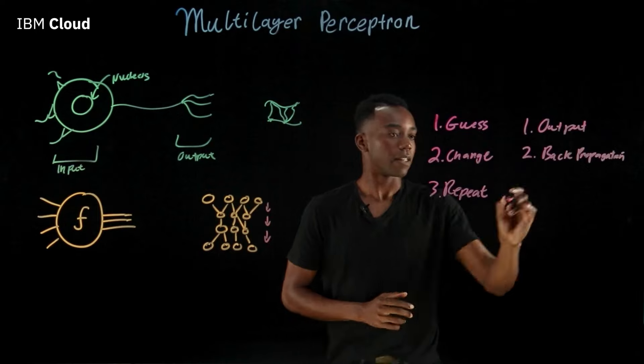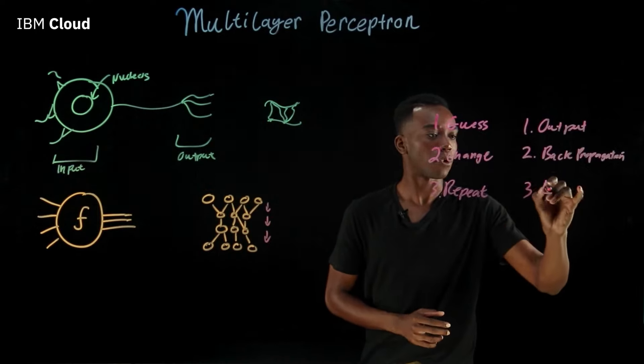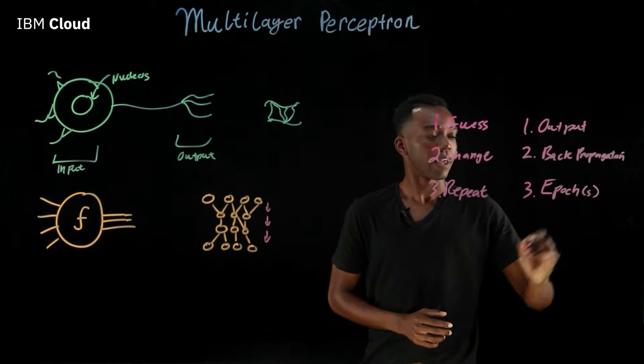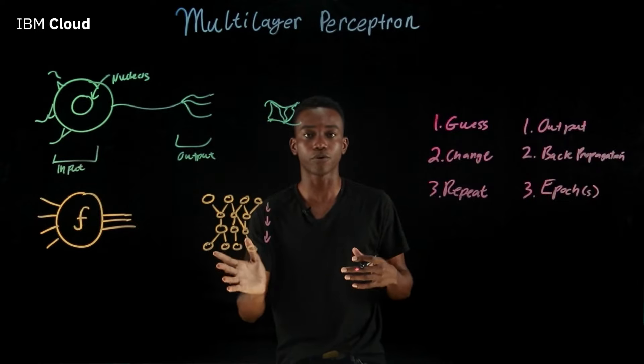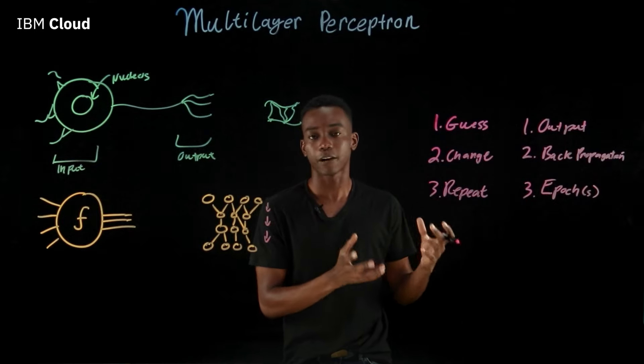Speaking of the next output, the process of repeating is called an epoch. Every epoch that a multilayer perceptron goes through brings it closer to the perfect output.